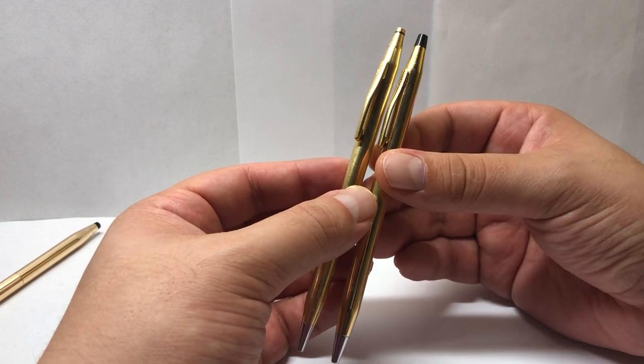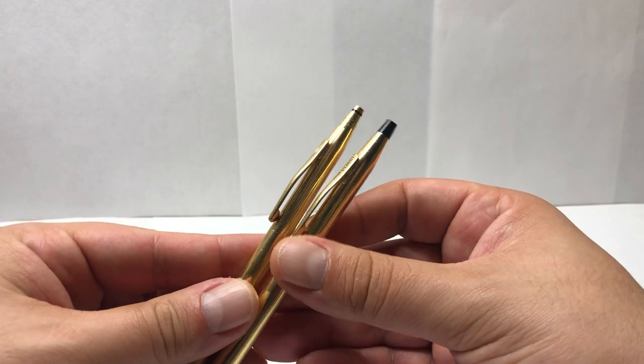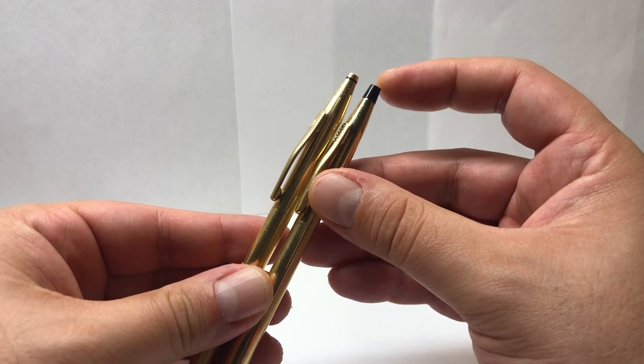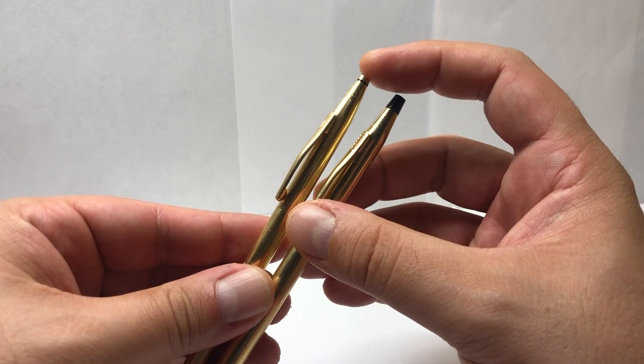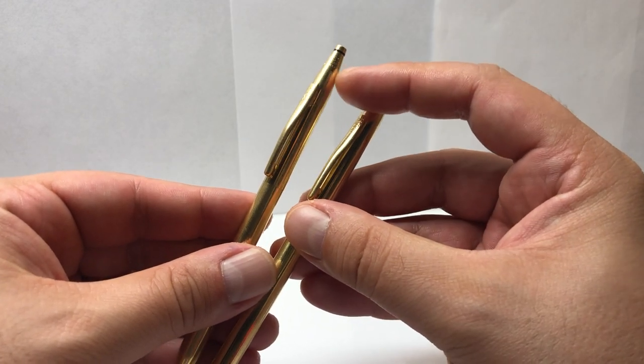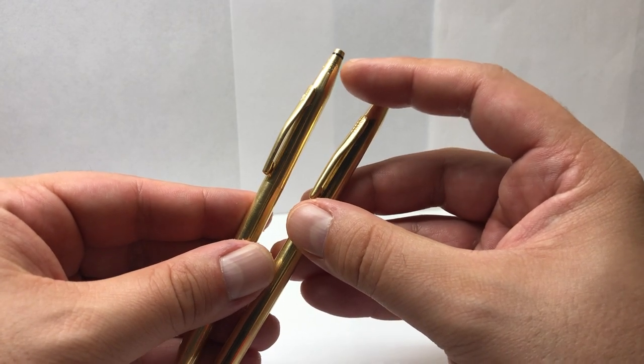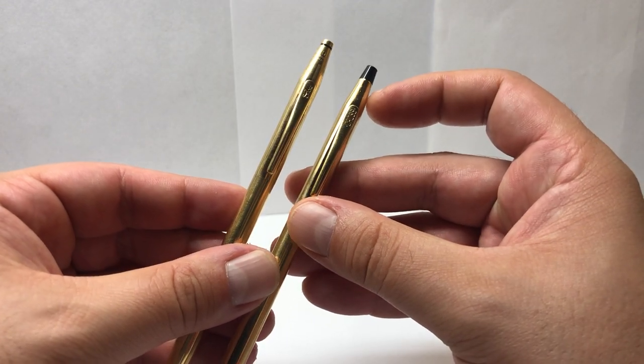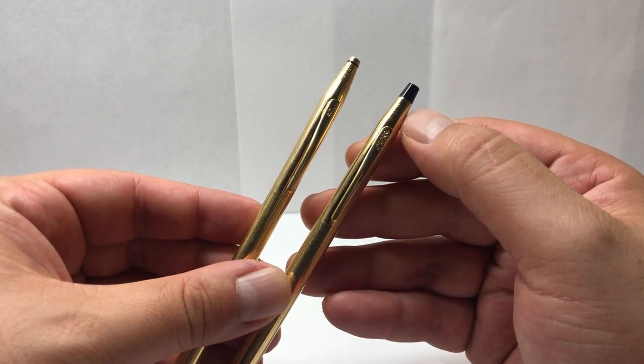But notice the difference with the cap. The traditional 10 carat and the 18 carat, it's more sleeker, more elegant. This one has more engraving, more explanation, but then again this is a vintage one and this one from the 90s has a very faint Cross USA, and that's it.